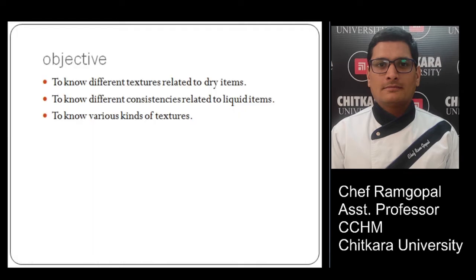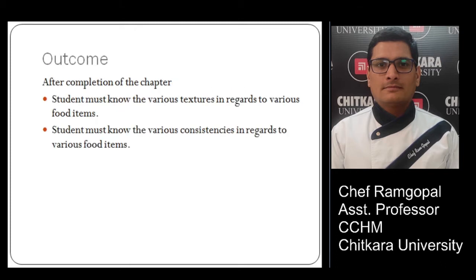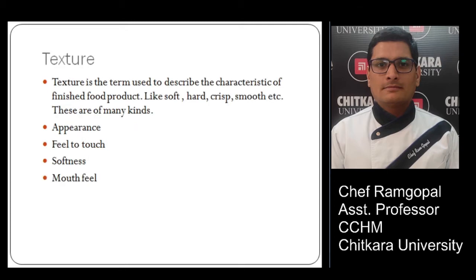The objective of the chapter is to understand textures related to dry items, understand various types of consistencies in liquid items, and understand how textures are identified. The outcome of the chapter is that after completion you must have knowledge of various textures and different types of consistencies.